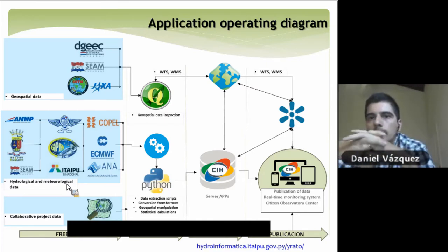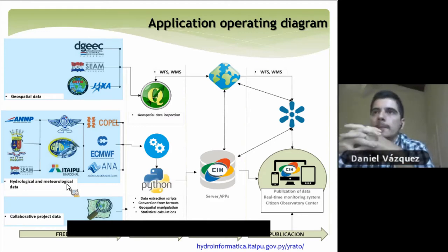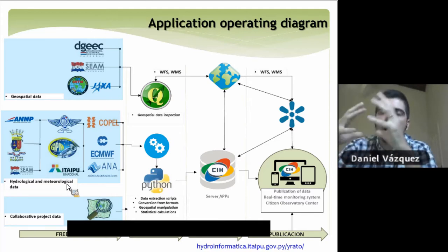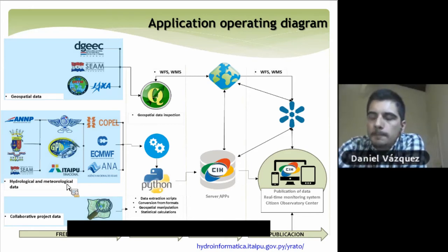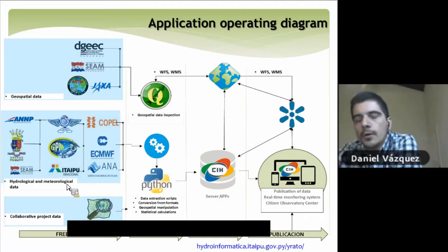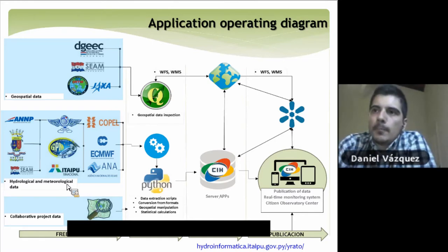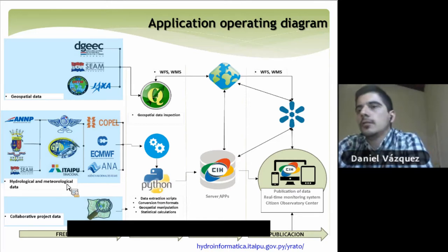As you can see in these two components: in the first one, a large volume of data is being captured, and in the second component, a large volume of information is being generated by the models. So we needed infrastructure to allocate all this data. We built a dedicated server to store all the information, a dedicated server to run the models in an operational fashion, and a dedicated server to handle the map services as well as the APIs shown in our web platform.